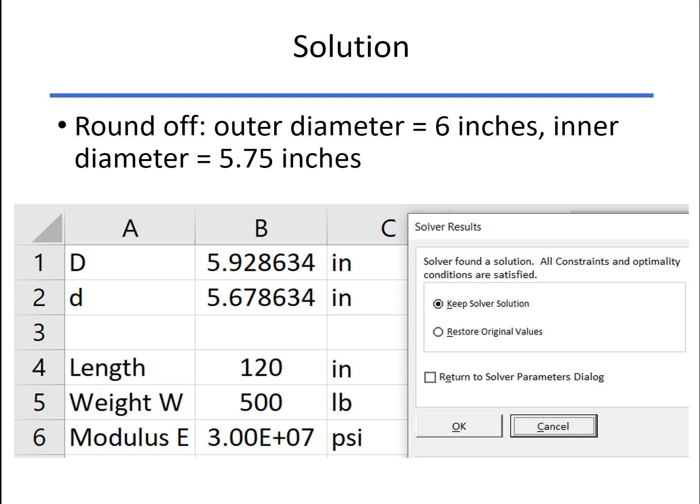So if we rounded this off, the outer diameter would be 6 inches, the inner diameter 5.75, so that we could find a standard size.